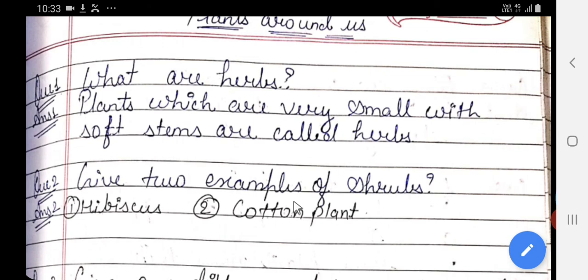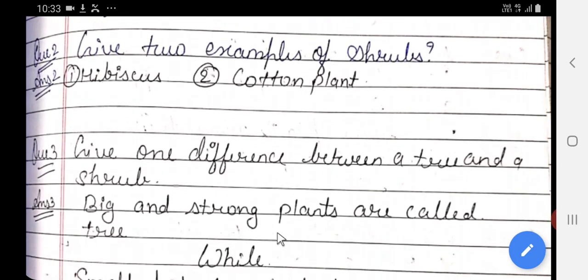Give two examples of shrub. Two examples of shrub. First one is hibiscus. Second one is cotton plant. Give one difference between a tree and a shrub. Say one difference.